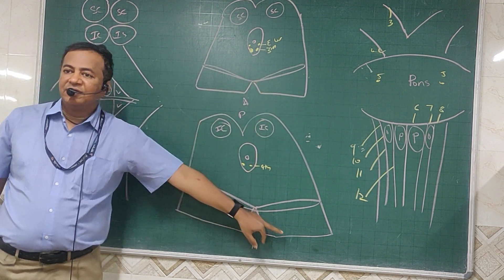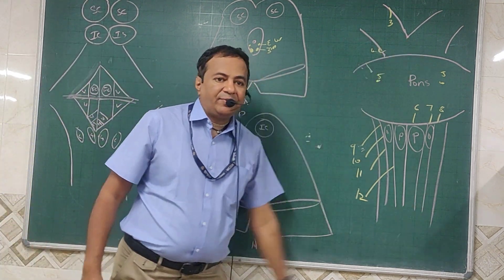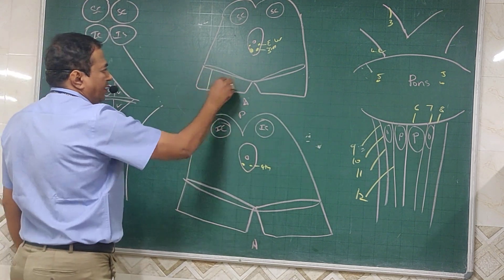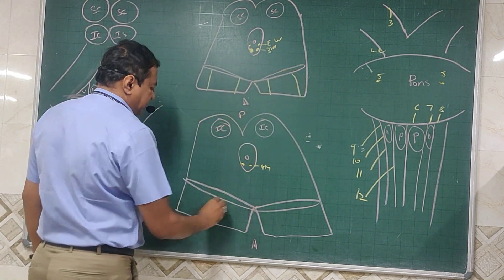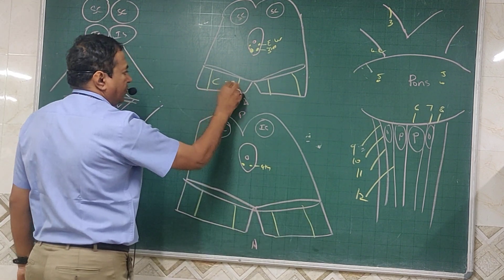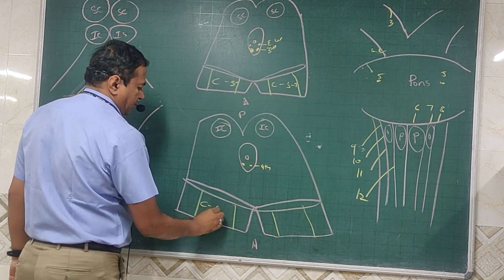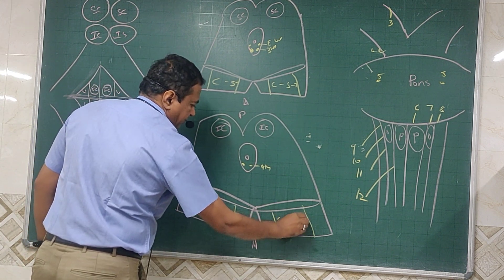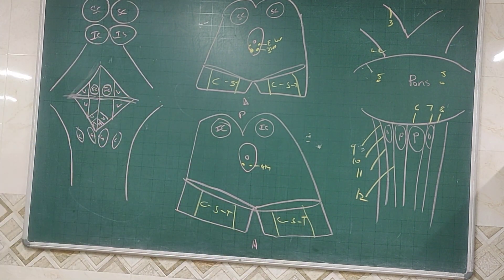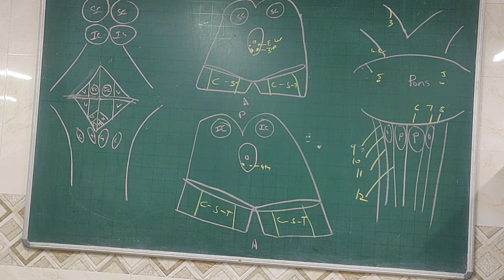Anteriorly, what do you see in the midbrain sections? You see the crus cerebri. In the crus, what is travelling? The corticospinal tract is present in the crus cerebri.